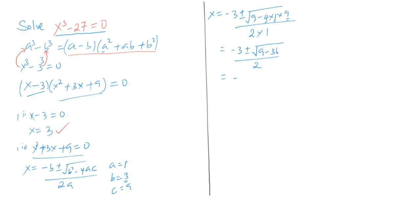We can simplify this to minus 3 plus or minus the square root of negative 27, because 9 minus 36 is negative 27, all over 2. At this point we are faced with a new problem because we have a root sign containing a negative number. We are going to rewrite negative 27 as negative 1 times positive 27, which hasn't changed a thing since negative 1 times 27 is still negative 27.